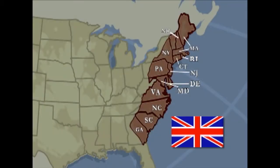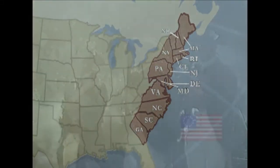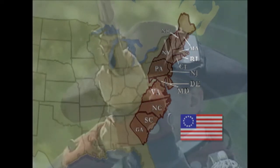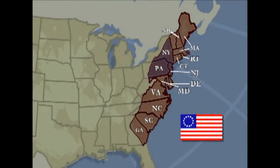By 1775, America consisted of 13 British colonies along the coast of the Atlantic Ocean. In 1776, the 13 American colonies started a war for independence against Great Britain. Soon afterwards, colonies in the north began to end slavery. In the southern states, things were different.